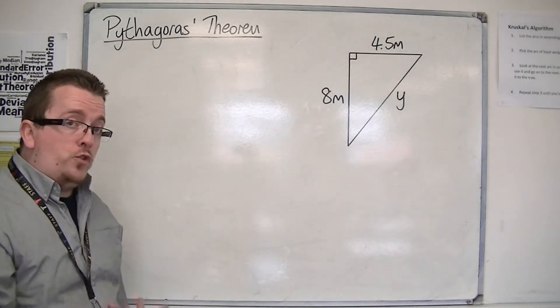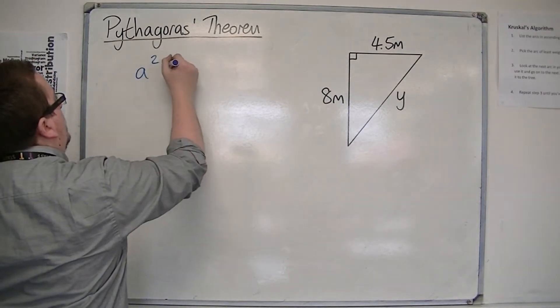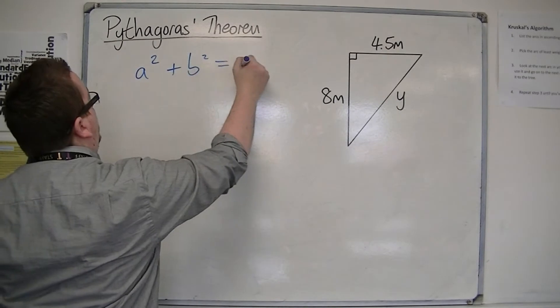It's a right-angled triangle, so we're going to use Pythagoras' theorem. First thing we write down: a² + b² = c².